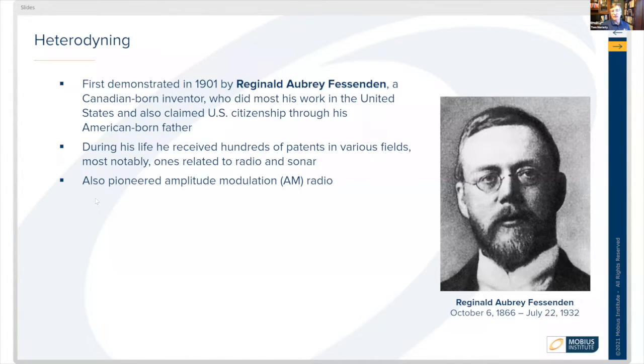It was invented by this gentleman, Reginald Aubrey Fessenden. He was a Canadian-born inventor, and he claimed some U.S. citizenship due to his American-born father. During his early life, he received hundreds of patents in various fields, mostly around radio and sonar. He also pioneered amplitude modulation, or AM radio.